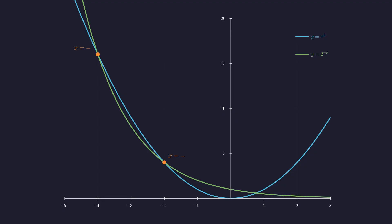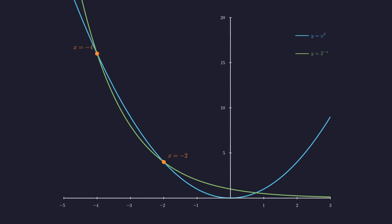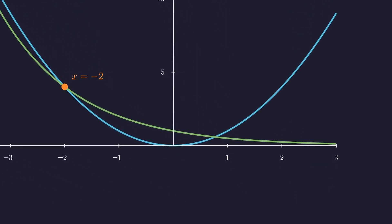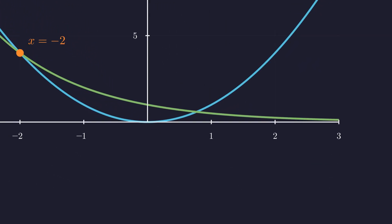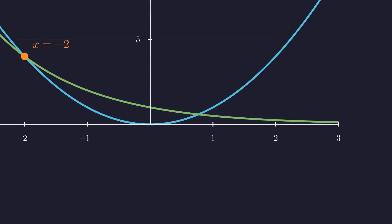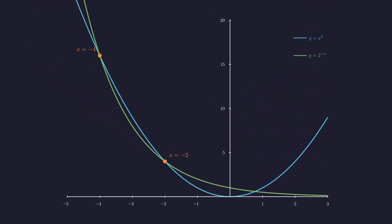Visual inspection reveals two clear intersection points at integer values, x equals negative 2 and x equals negative 4. However, zooming in on the positive x-axis reveals a third non-integer intersection point. The graphical analysis suggests there are precisely three real solutions to find.